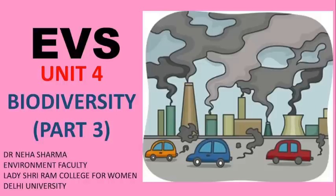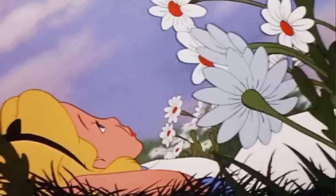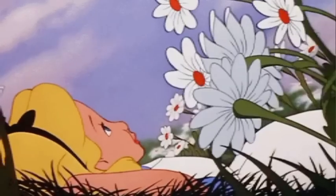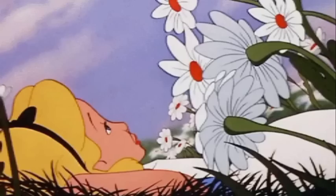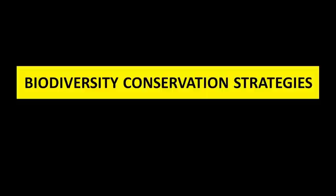Hello everyone. In this video, we are going to discuss about biodiversity — this is part 3 of the video. Biodiversity means variety of life forms that exist around us. It includes plants and animals, which keep the balance of environment intact and are also very important commercially, socially and culturally. In this video, we will discuss biodiversity conservation strategies — that means how we can protect different types of plants and animals, especially those for which population count is extremely low.